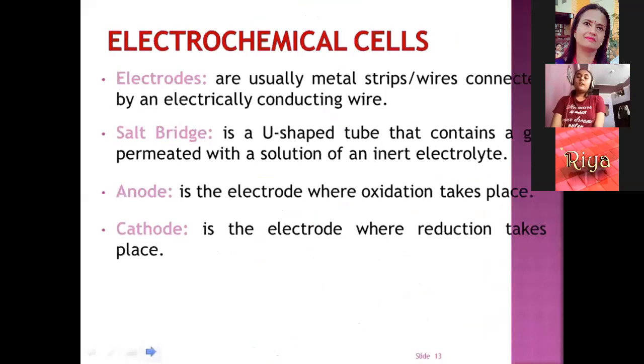Electrochemical cells. First, electrodes are usually metal strips or wires connected by an electrically conducting wire or salt bridge. Salt bridge is a U-shaped tube that contains a gel permeated with a solution of an inert electrolyte. Anode is the electrode where oxidation takes place and cathode is the electrode where reduction takes place.